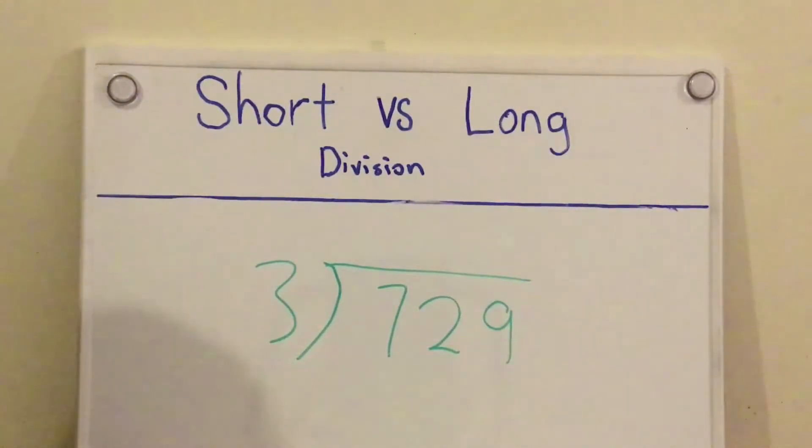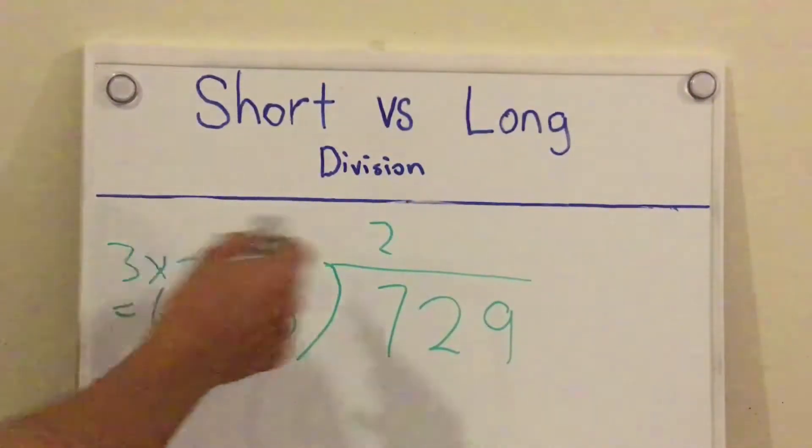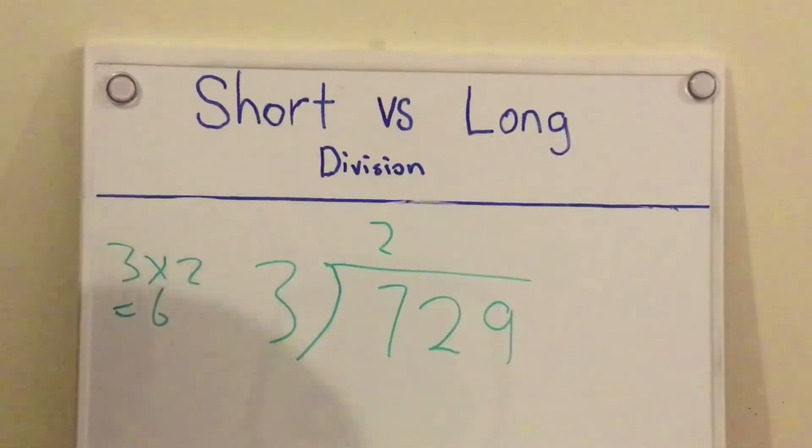Okay, so 7 divided by 3. We need to see how many times 3 goes into 7. So we can go 3 times 2 and you get a result of 6. So straight away we know that it goes into 7 two times. So 2 times 3 is 6 and the remainder is 1.